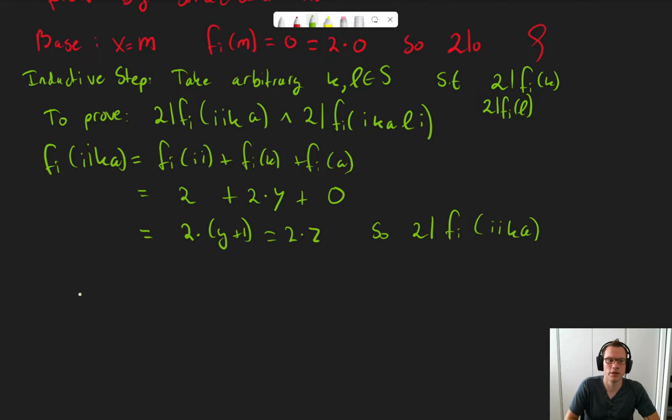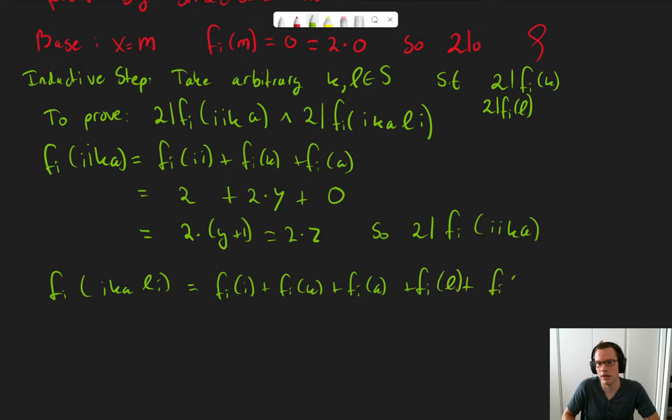Now, let's take a look at the second part. We also need to prove that the number of i's in iKALi is divisible by two. Okay, well, this is the number of i's in i, plus the number of i's in K, plus the number of i's in A, plus the number of i's in L, and in i. Which is one, plus two times Y, plus zero, plus two times C, plus one. Which is two times Y plus C plus one, which is two times Z. So, two divides fi of iKALi.